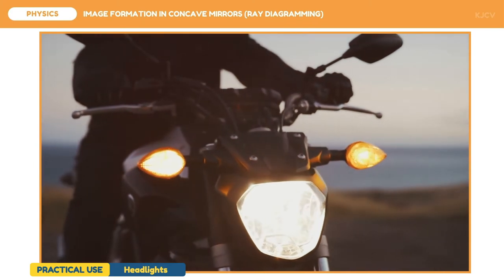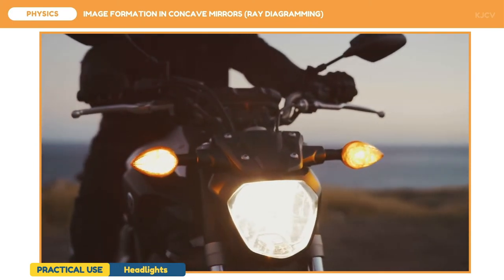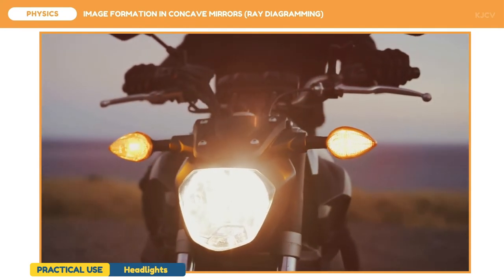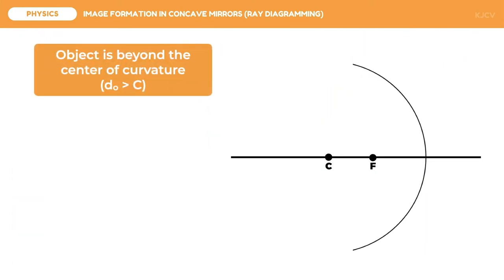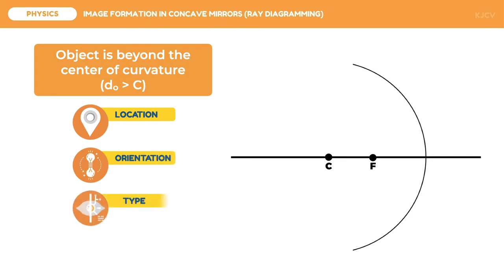But how do concave mirrors form images? In this lesson, we are going to use the method of ray diagramming to see the image formation in concave mirrors and describe the qualitative characteristics of these images. For our spherical mirror diagram, we should always put the focal point exactly in between C and V. The focal length should equal the distance from the focal point to the center of curvature. For each ray diagram, we identify the image's location, orientation, type, and size — what we call our LOTS.